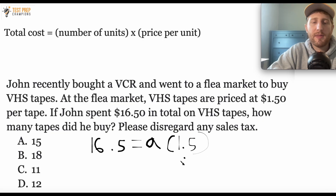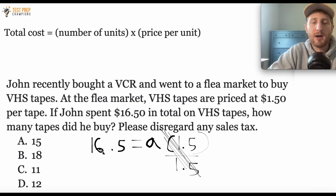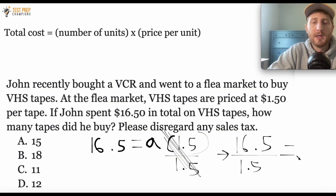I have the equation set up and the goal is to solve for A — to get A by itself. Since I have A times 1.5, I do the opposite, which is division. If I divide by 1.5, the 1.5s cancel out. Whatever I do to one side, I also have to do to the other. So I'll have 1,650 divided by 1.5 equals A. Using my calculator, I see that C, 1,100, is the correct answer.